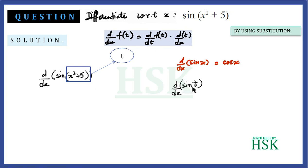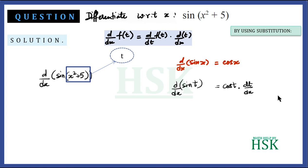We know that d/dx of sin(x) equals cos(x), so d/dx of sin(t) would equal cos(t). We are going to first differentiate sin(t) with respect to t, and then multiply by d/dx of t.